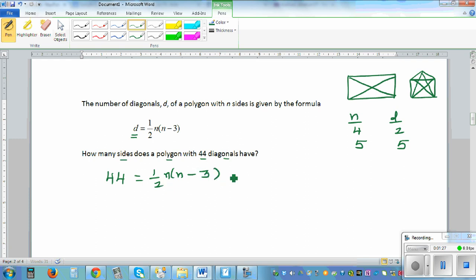I want to get rid of this one-half, so I'm going to multiply by 2. The 2 and this 2 gets cancelled, so 88 equals n times n minus 3.